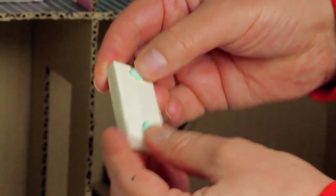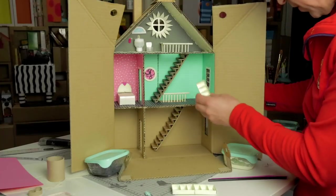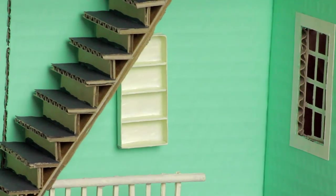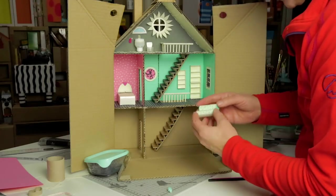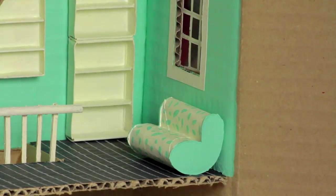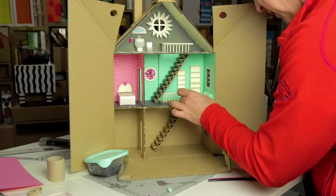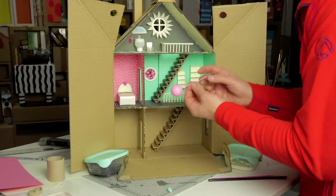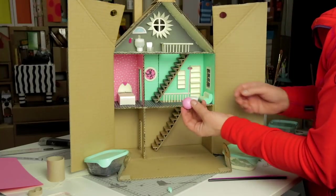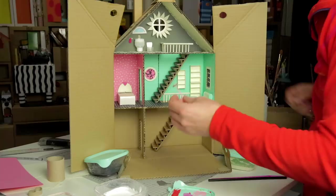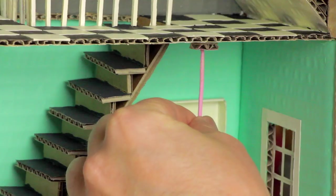The sofa goes under the window, the table, and the fancy pink lamp. I'm going to put some glue on the top and then glue it to the ceiling.